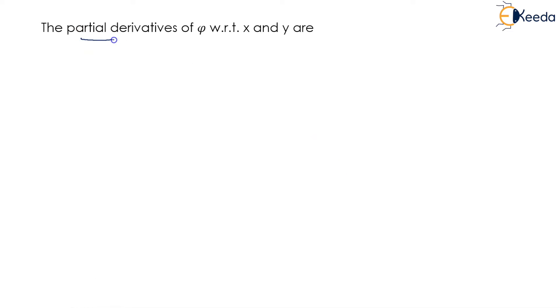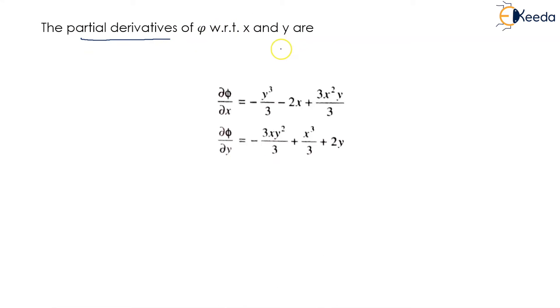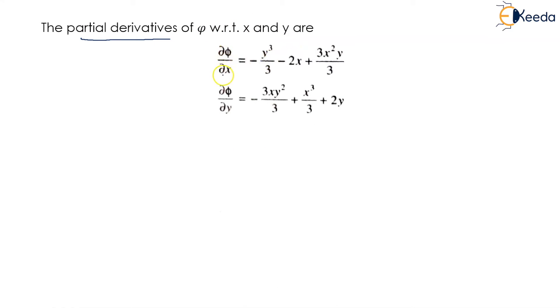Taking the partial derivative of ψ with respect to x and y, we obtain: ∂ψ/∂x = -y³/3 - 2x + x²y (equation 1), and ∂ψ/∂y = -xy² + x³/3 + 2y (equation 2).